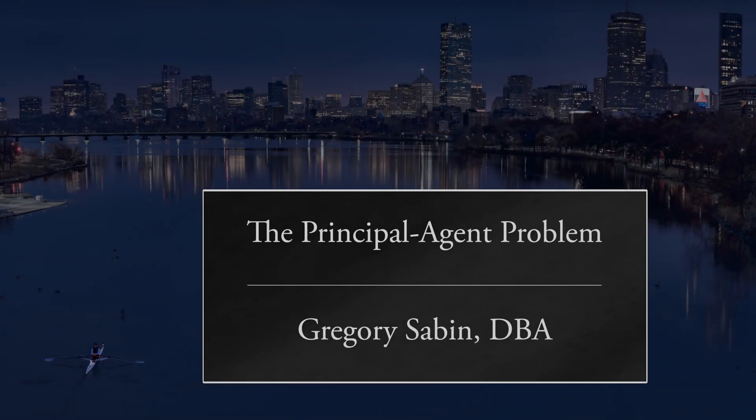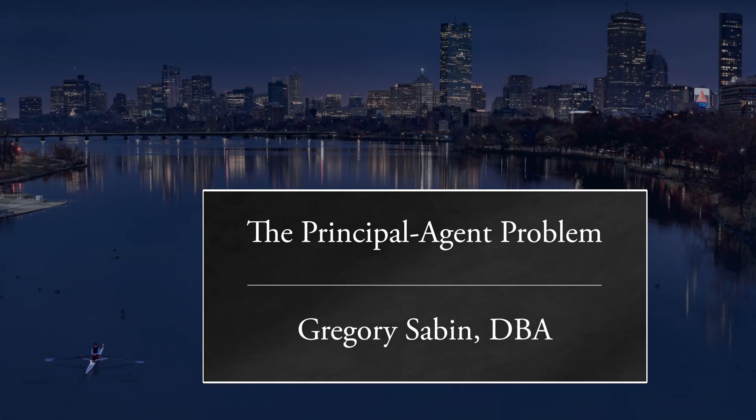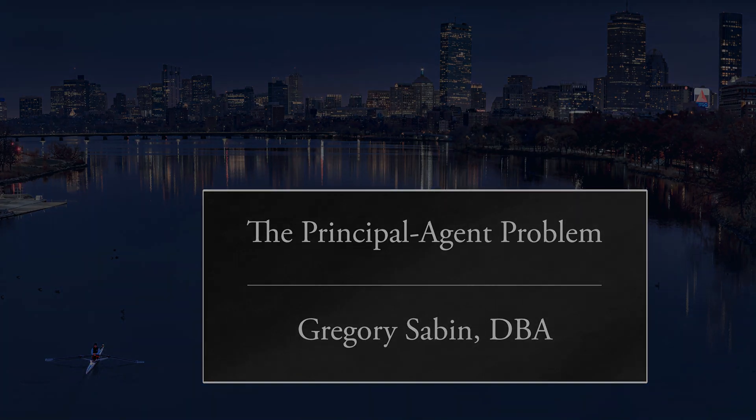Why was this paper so important? Well, stick around and I'll explain it to you. 'Theory of the Firm, Managerial Behavior, Agency Costs, and Ownership Structure' is the name of the paper that Jensen and Meckling published in the Journal of Financial Economics back in 1976.